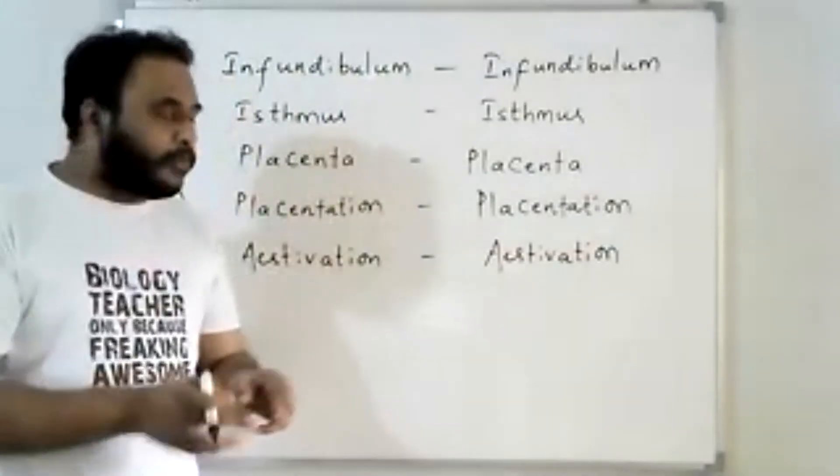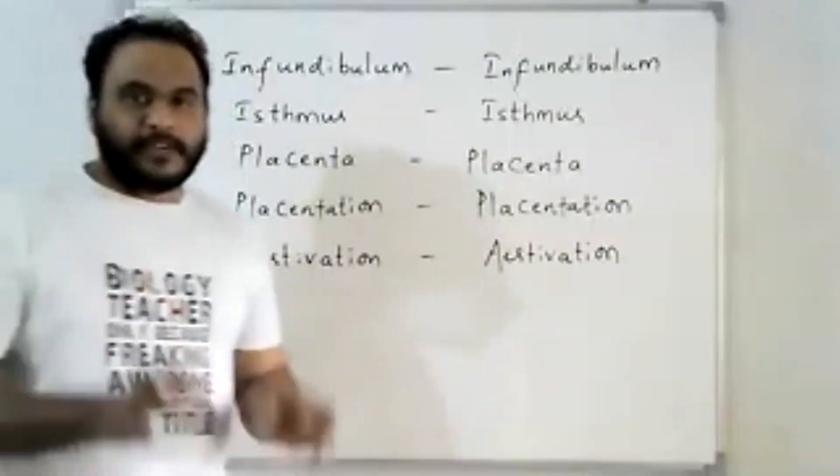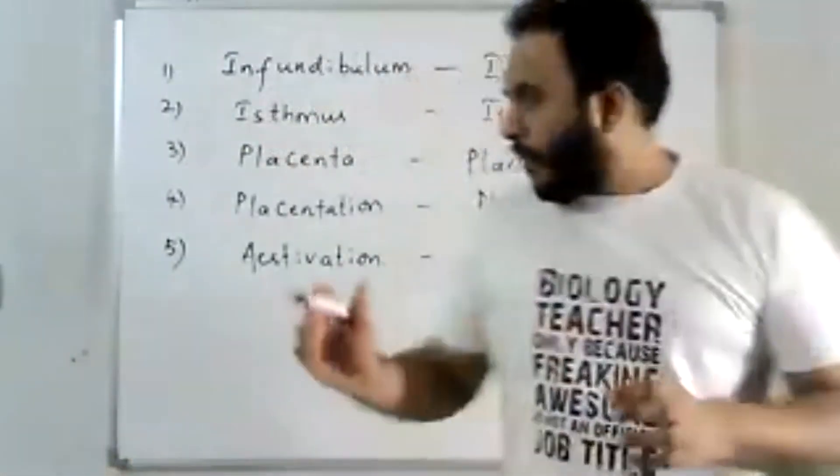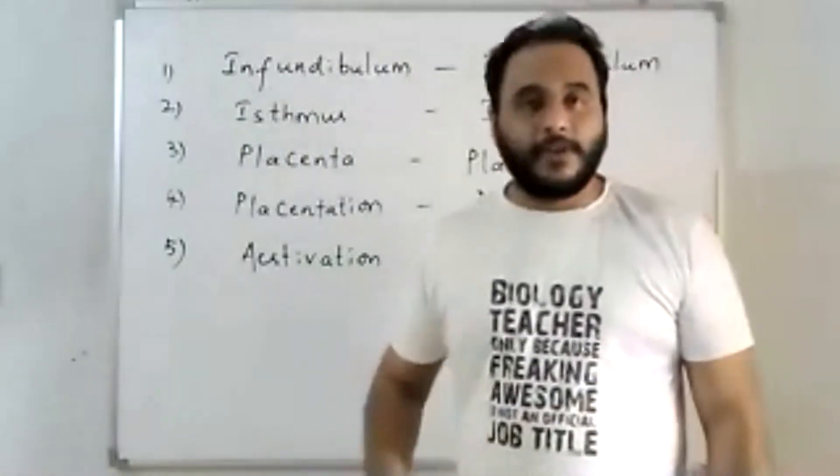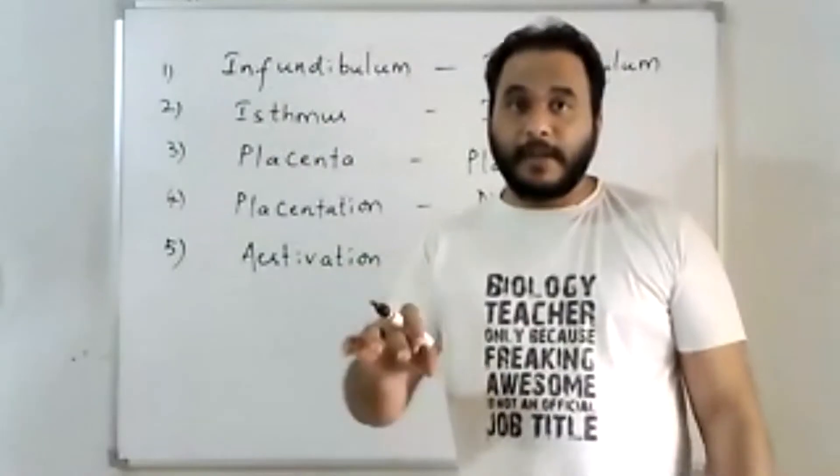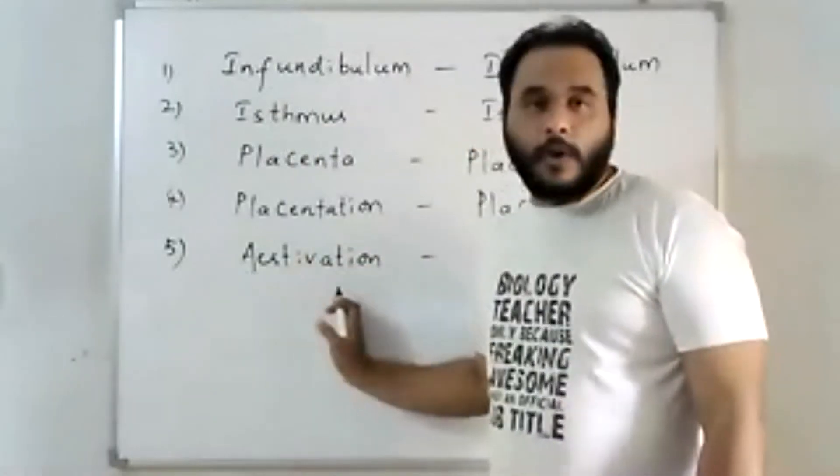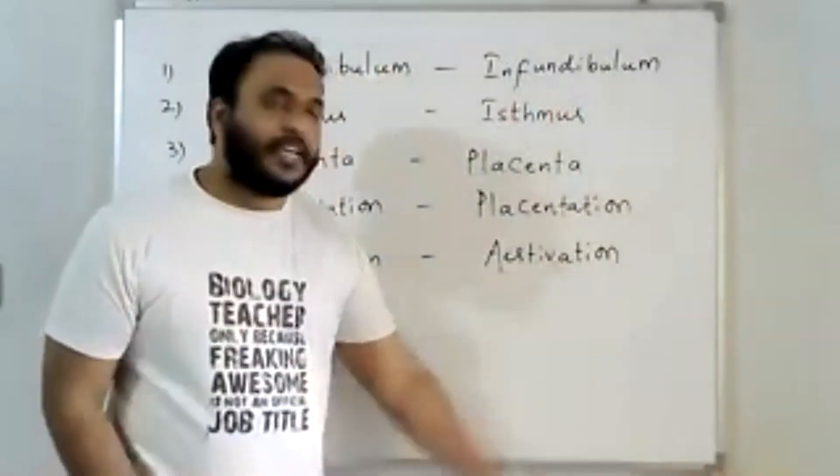Attachment of ovules, arrangement of ovules in the ovaries is called placentation. So coming to aestivation. It's quite simple. Here, in morphology of flowering plants, you might have seen this aestivation: the arrangement of sepals and petals in the flowers. Sepals and petals arrangement, that is called aestivation. Coming to this aestivation in the morphology of flowering plants.